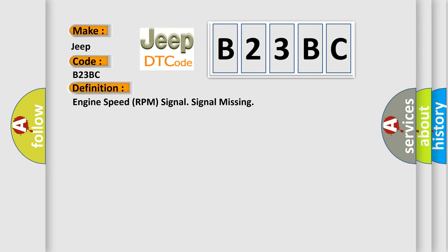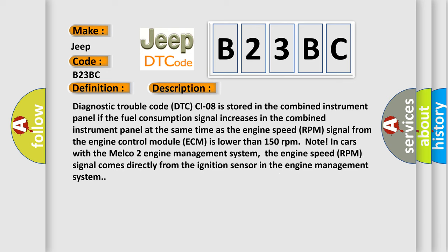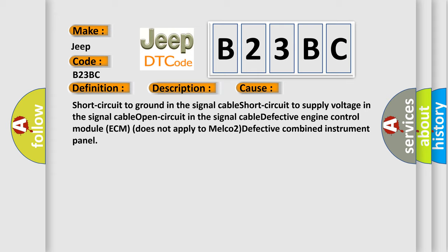The basic definition is: Engine speed RPM signal missing. Diagnostic trouble code B23BC is stored in the combined instrument panel if the fuel consumption signal increases in the combined instrument panel at the same time as the engine speed RPM signal from the engine control module (ECM) is lower than 150 revolutions per minute. In cars with the MELCO 2 engine management system, the engine speed RPM signal comes directly from the ignition sensor. This diagnostic error occurs most often due to: short circuit to ground in the signal cable, short circuit to supply voltage in the signal cable, open circuit in the signal cable, defective engine control module ECM (does not apply to MELCO 2), or defective combined instrument panel.